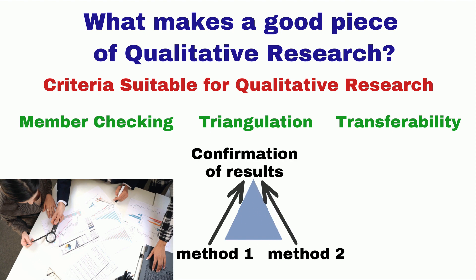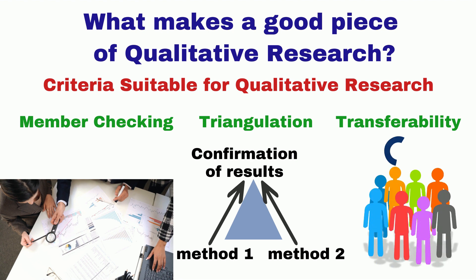The third and last criterion is transferability. It refers to the extent to which qualitative results can be transferred to other people or similar contexts. To ensure this, the researcher has to describe the context, participants, settings, and circumstances of the study in detail so that the reader can better judge whether the results are safe to transfer or not. Thank you.